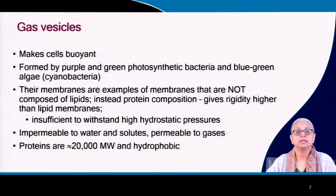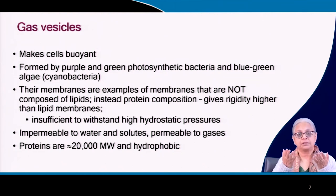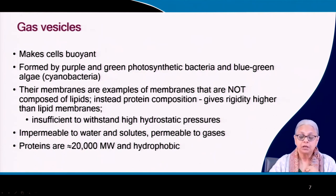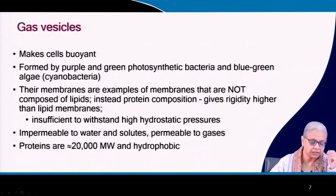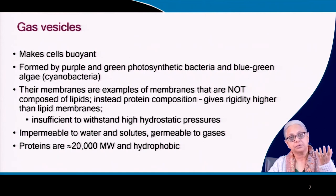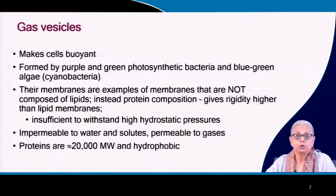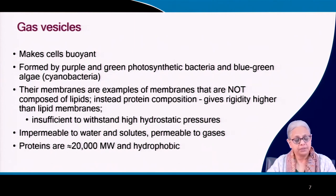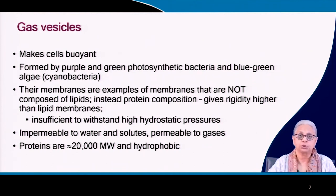Let's look at the next organelle: gas vesicles. These gas vesicles are like bubbles inside the bacterial cell and help the bacterial or algal cell to rise to the surface. They give buoyancy, and this buoyancy is very important for photosynthetic bacteria and cyanobacteria or blue-green algae. These photosynthetic bacteria need to harvest solar energy, and they can maximize their harvesting of solar energy by remaining at the top of the water column.